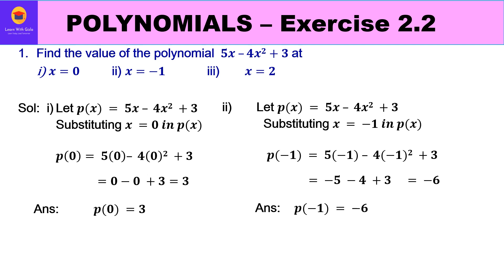The first question is: find the value of the polynomial 5x - 4x² + 3 at x=0, x=-1, and x=2. Starting with x=0: p(0) = 5(0) - 4(0)² + 3. Since 5×0 is 0 and 4×0 is 0, we get p(0) = 3.